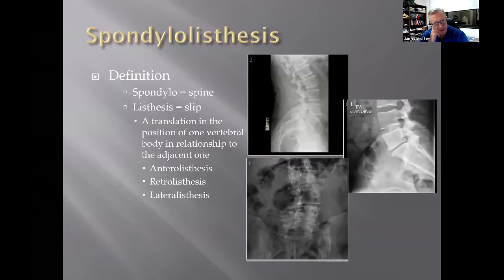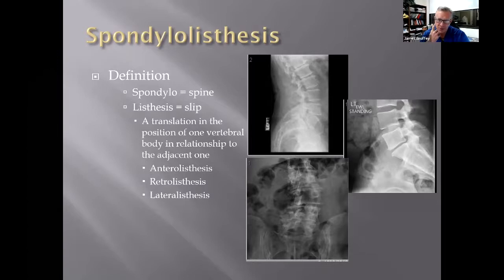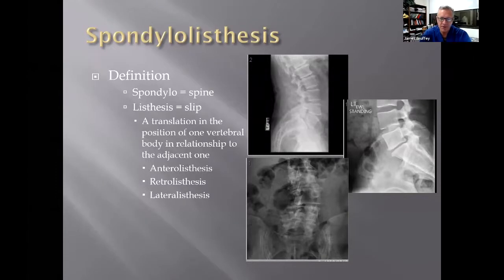Spondylolisthesis by definition breaks down into two parts: 'spondylo' meaning spine, and 'olisthesis' meaning a slip or shift. It's a translation in the position of one vertebral body relative to the adjacent one, and it comes in various forms. You can have anterolisthesis, which is probably the most common and most studied, retrolisthesis where a superior body slides posteriorly on the inferior body, and lateralolisthesis where one body slides to the side on an AP X-ray. They all have different pathologies, causations, and classifications.